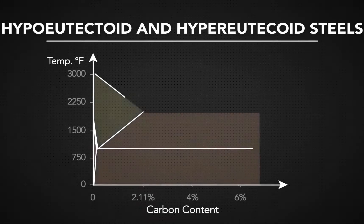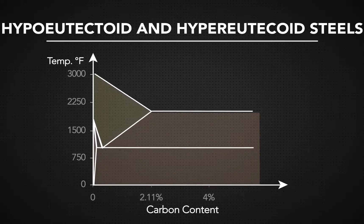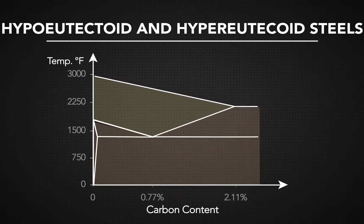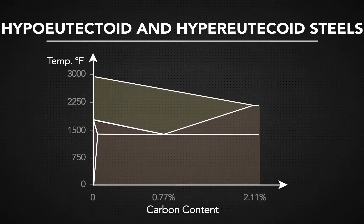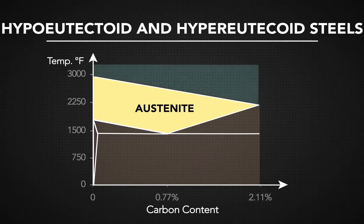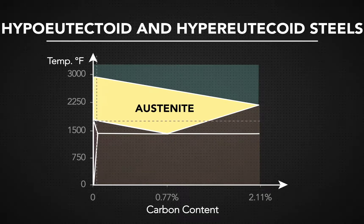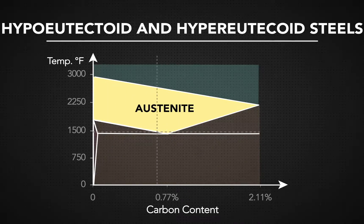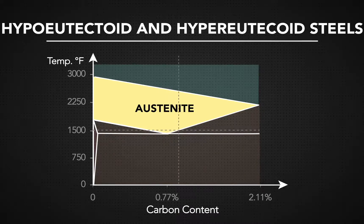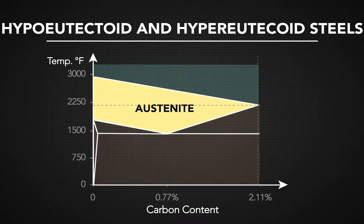Knowing how carbon precipitates is vital in understanding how steel will react at various temperatures and phases. The austenite phase has 0% carbon. As more carbon is introduced, the temperature of phase transformation lowers. Once the threshold of 0.77% carbon is reached, temperature climbs along with carbon content.